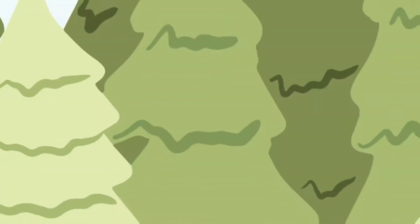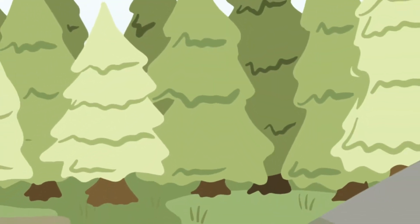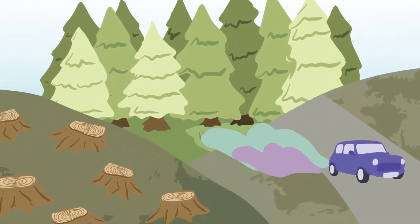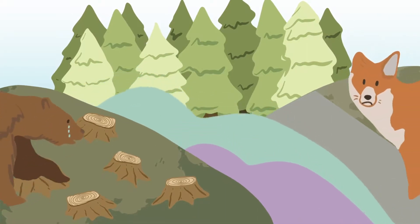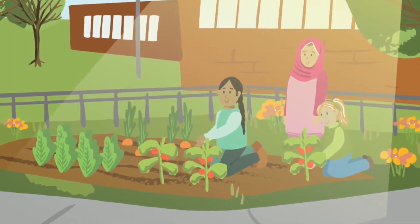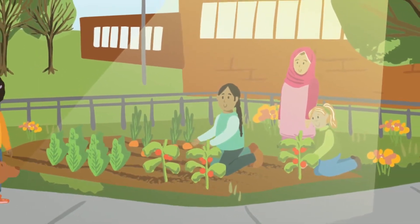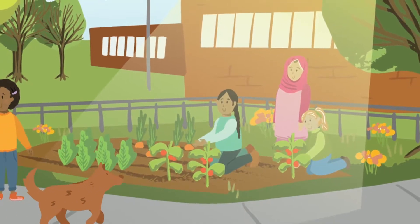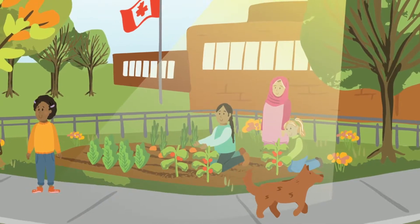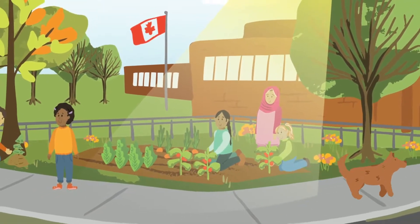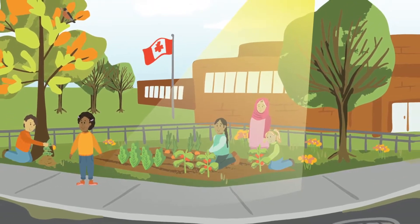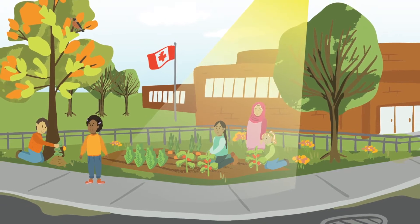However, humans have disturbed that balance. When we cut down trees and don't plant them back, or destroy plant habitats, or pollute the earth, we have a huge impact on all living things. But people are realizing the importance of the relationships between plants, people, and our planet. We need to protect our plant habitats. We can do this by planting trees or gardens, and protecting the plants we already have. What are the ways that you can protect the plants around you?